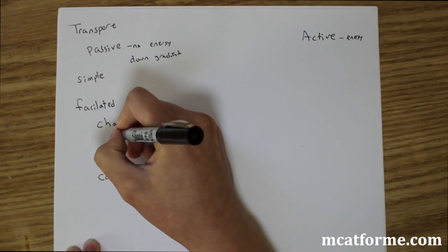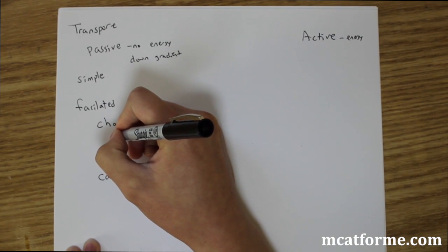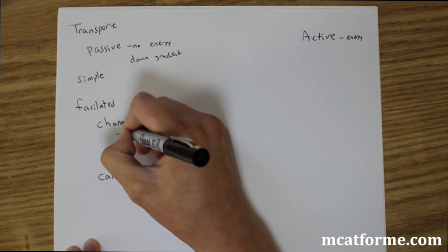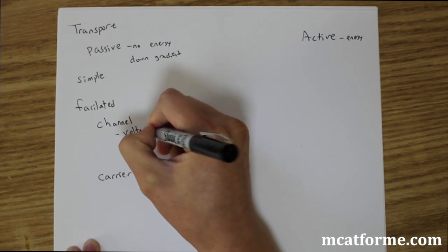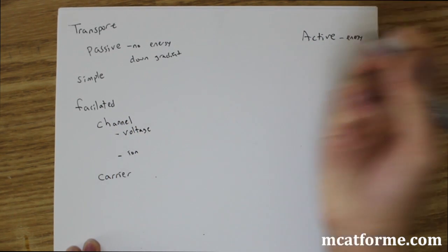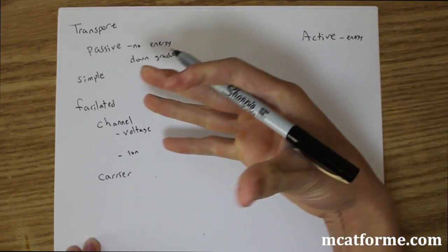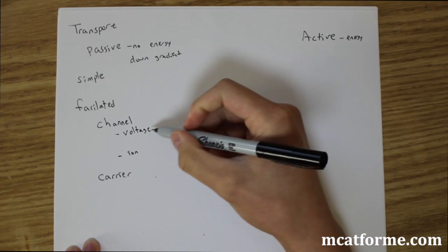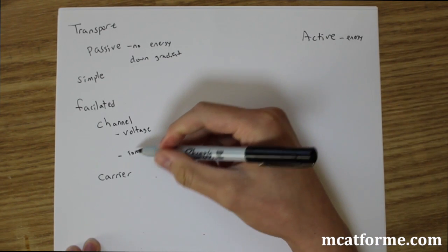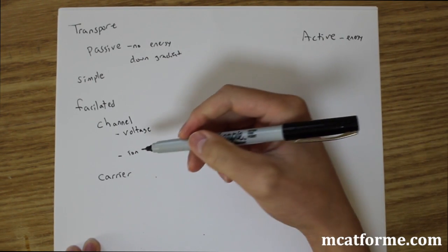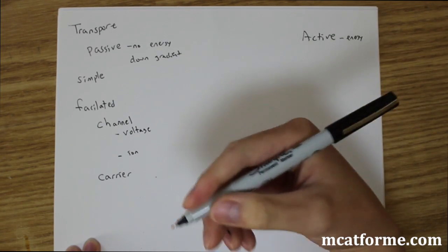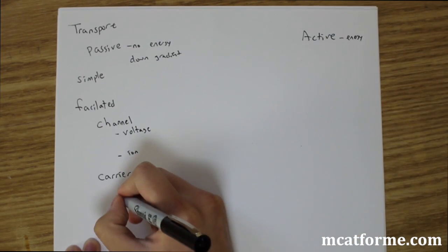So channels are a type of protein facilitator. And there's voltage gated and there's also ion gated. And they're both channels. So voltage gated is activated so the channel will open when you have some type of change in electric potential or voltage. And for ion channels it's when you have some type of change in charge.